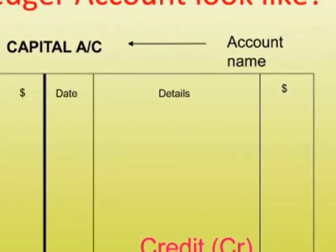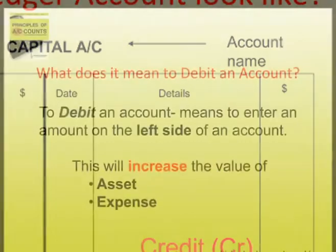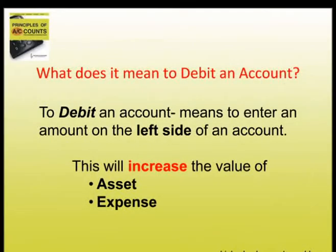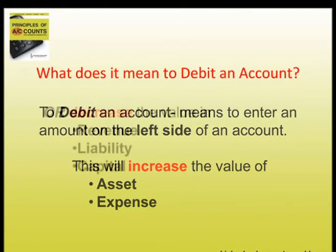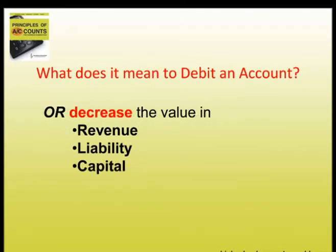So now that we've seen what a ledger account looks like, what does it mean to debit and credit? To debit an account means to enter an amount on the left side of an account. This is done when the value in an asset and expense account must be increased, or the value in revenue, liability, and capital accounts must be decreased.